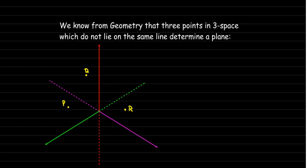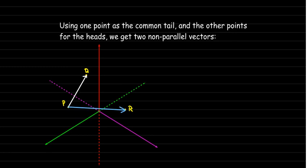If you have three points that do not lie on the same line, that's equivalent to having two vectors which are parallel to the plane but are not parallel to each other. We can do that by just letting one of the points be the common tail, and then the other two points will be the heads of those two vectors.